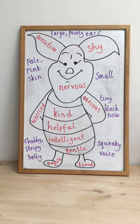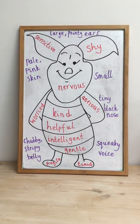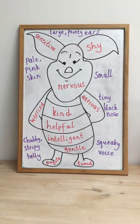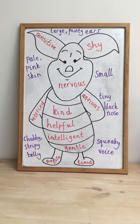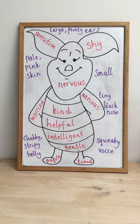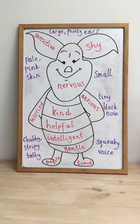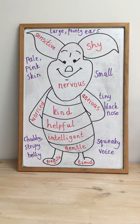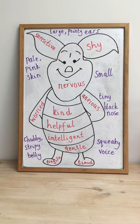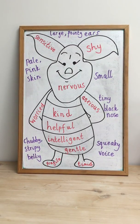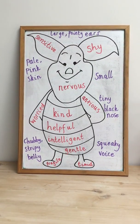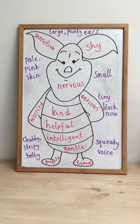But what do they look like on the outside? On the outside this character has large pointy ears, they're very small, they have a tiny black nose, a squeaky little voice, their belly is chubby and stripey, and they have pale pink skin.